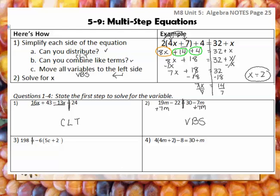Looking at number 3, do I have distributive property? Yes, right here. It's on the opposite side of the equation that we're used to seeing it, but that's okay — it still needs to go first, so I need to distribute. For number 4, do I need to distribute? Yes, right here: 4 times 4m and 4 times 2. So I need to distribute first.